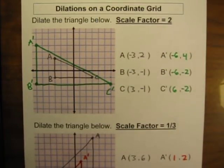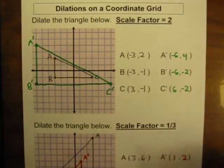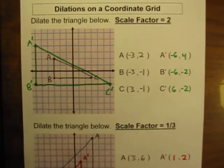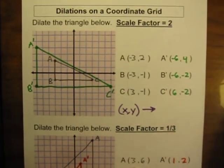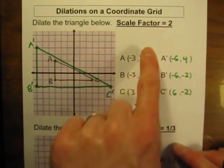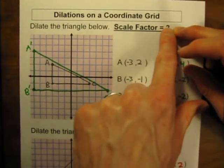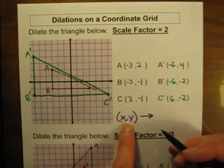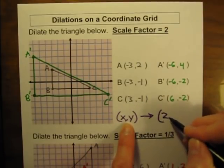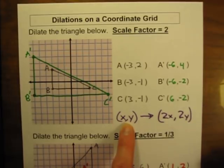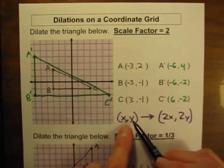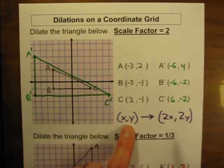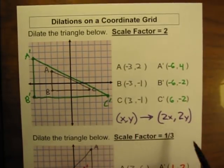One final thing: how do you write the coordinate rule for a dilation? For all the other types of transformations we've been writing coordinate rules, so let's do it here too. If we have some general point x, y, what will the new point be? For a scale factor of 2, I multiplied the x coordinate by 2 and the y coordinate by 2. So any point x, y becomes 2x, 2y. That is the coordinate rule for a dilation with a scale factor of 2.